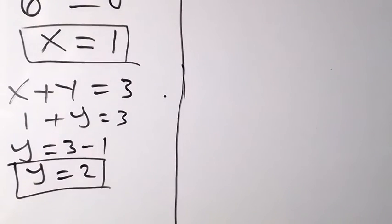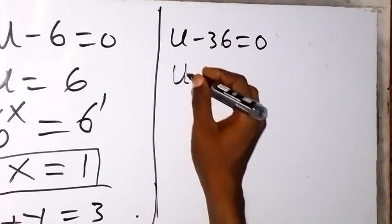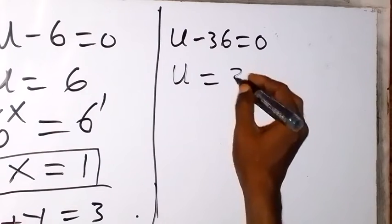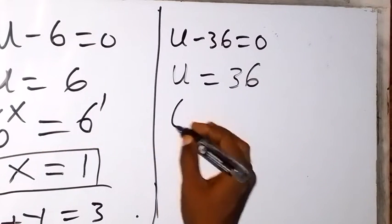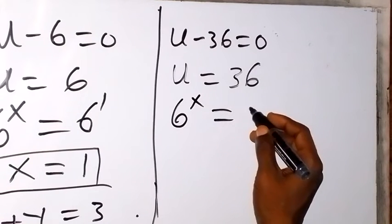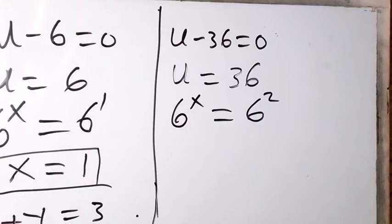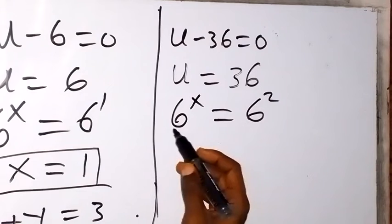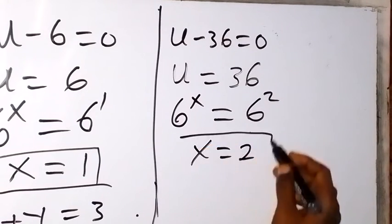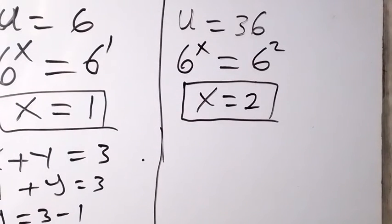From the other solution, u equals 36. Since u equals 6 raised to the power x, we have 6 raised to the power x equals 36, which is 6 squared, or 6 raised to the power 2. Equating the powers since we have the same base, x equals 2.